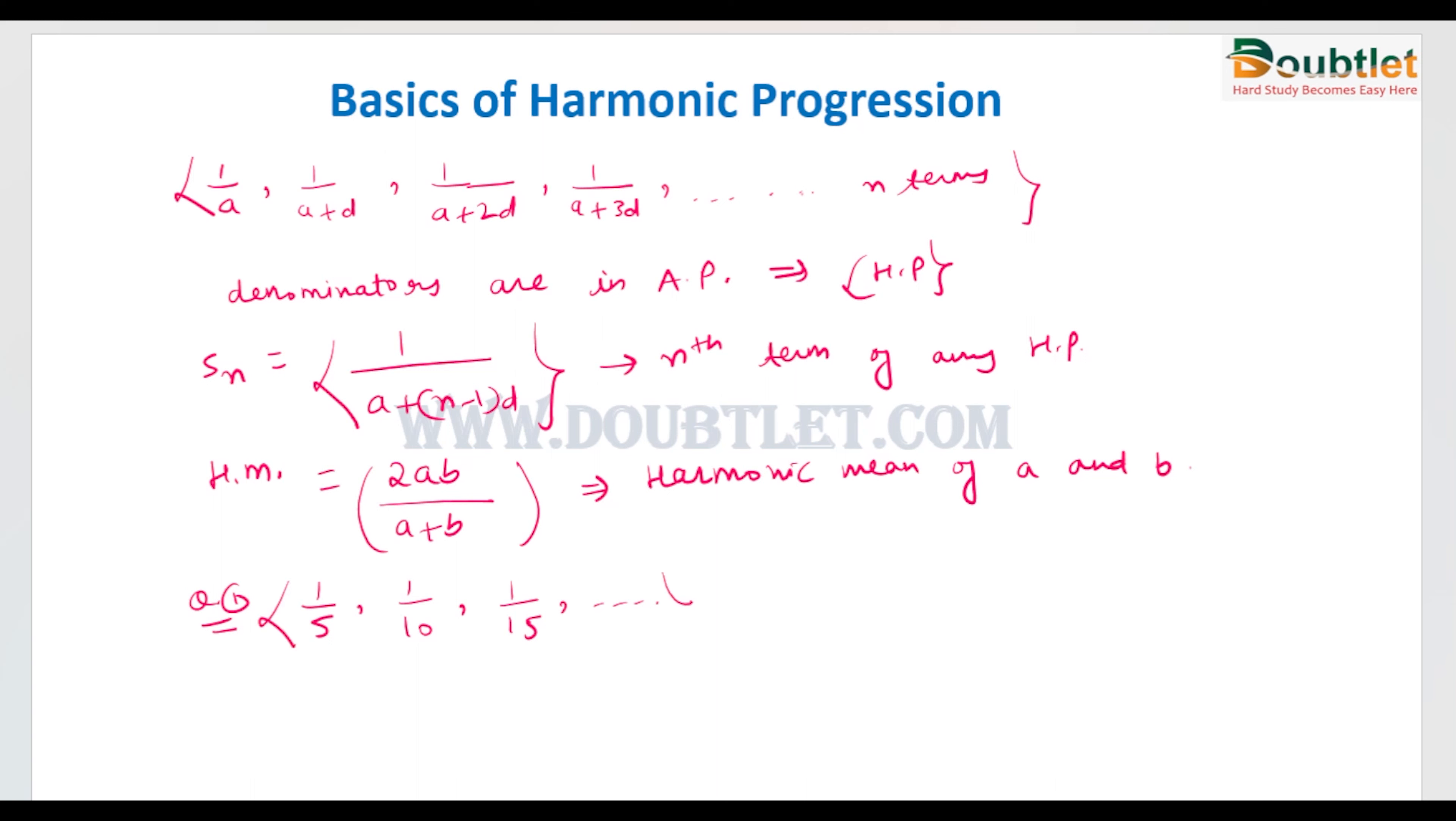Suppose you need to find the 10th term of this series. What we will do is use the nth term formula for an AP in the denominator. So we can write this as 5 plus 10 minus 1 into 5. 5 is the common difference.